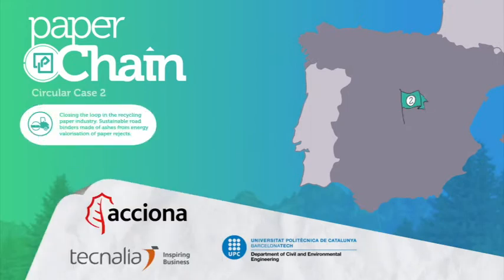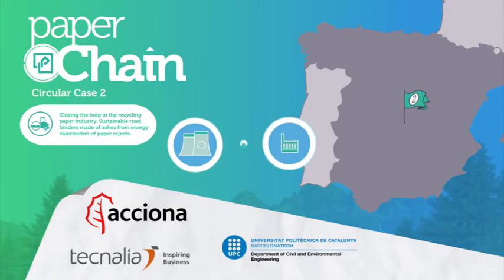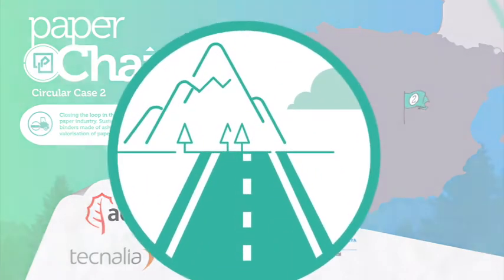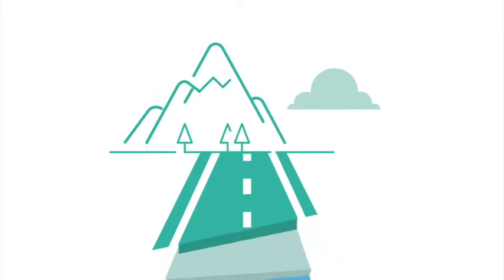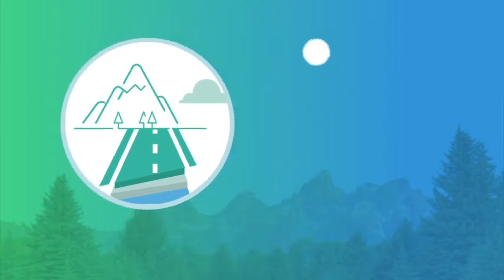The Spanish circular case seeks to use waste paper ash in road construction works. Roads are more than just the asphalt you can see. Beneath the pavement, there are different layers designed to heighten its endurance. The composition of these layers depends on the requirements of each road.